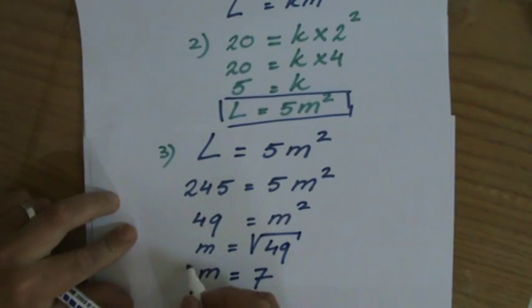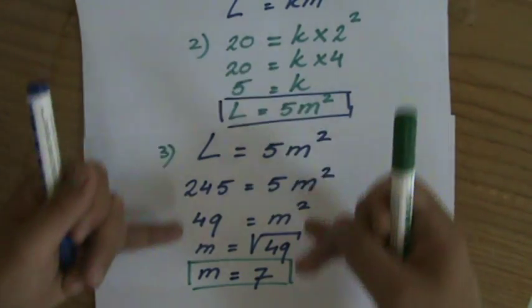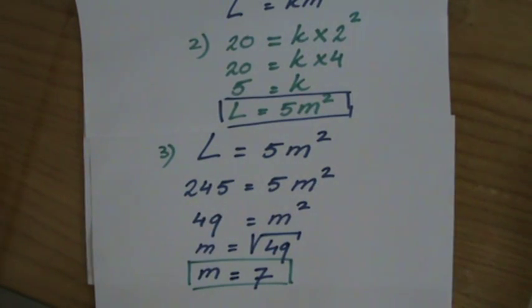So m equals 7. And we put a box around that. So the person that is looking at our work can easily see what our final answer is. You can easily follow the steps we took to get to the final answer, which are far more important than just the answer by itself.